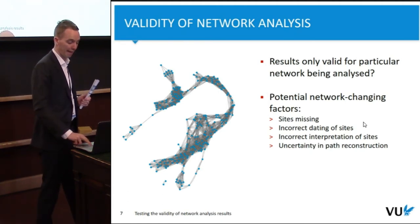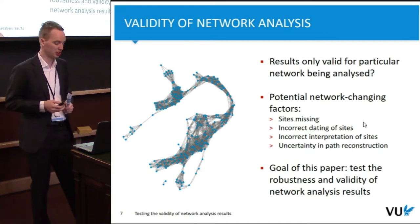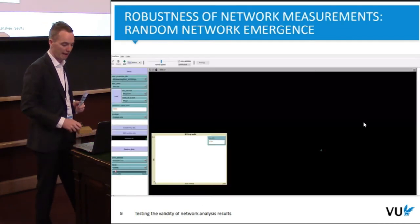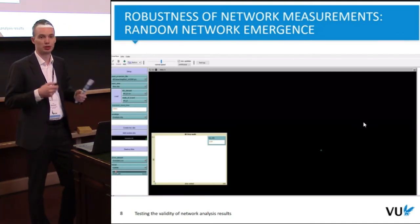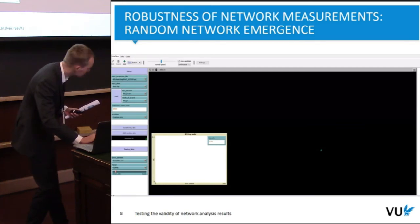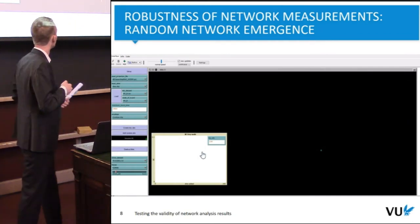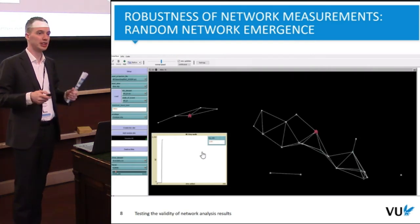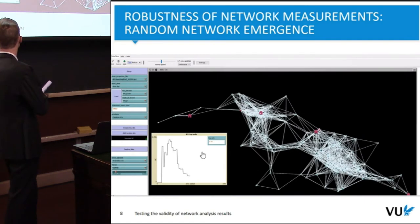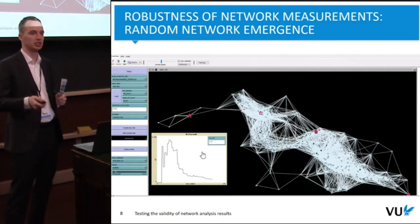The goal of this paper is to test the robustness and validity of our network analysis results, to better understand how valid our archaeological interpretations are. I've done this in NetLogo, though it could be done in any language. The network starts with one site and subsequently new sites are added from the pre-existing dataset with all associated connections, recalculating betweenness centrality at each step. We're interested in seeing how this develops and whether there is some sort of stabilization of results.